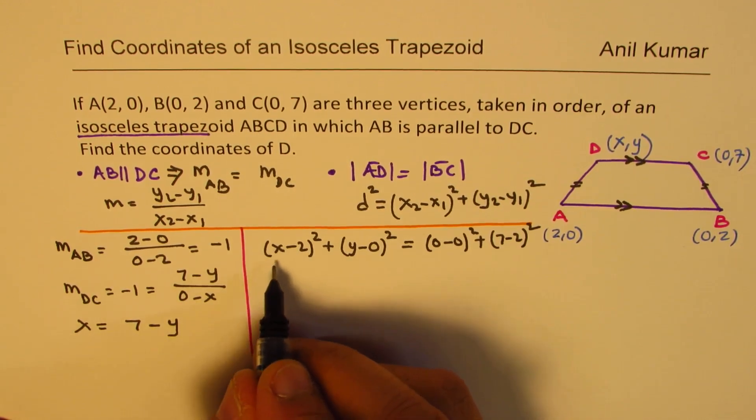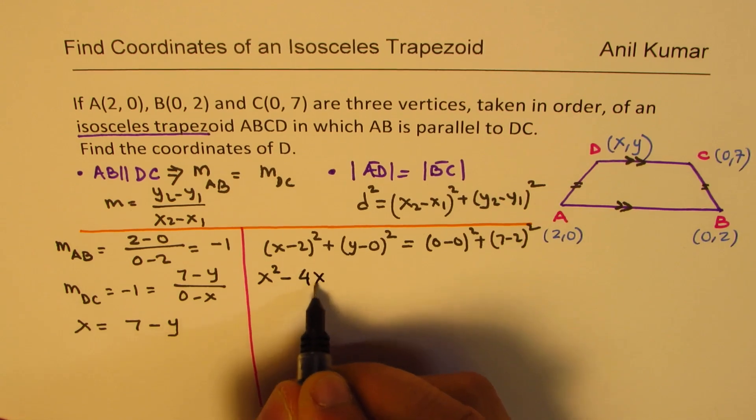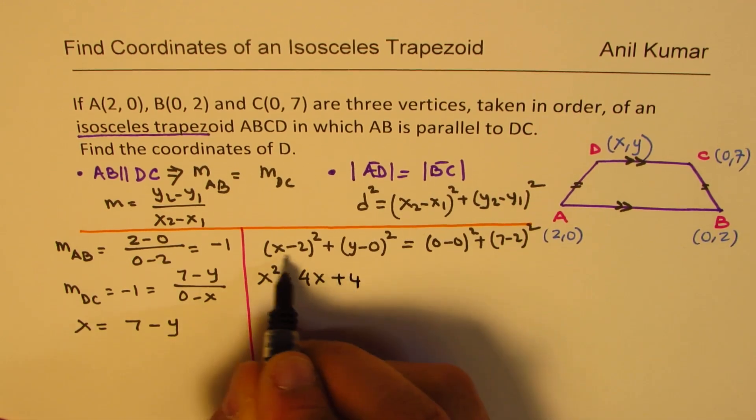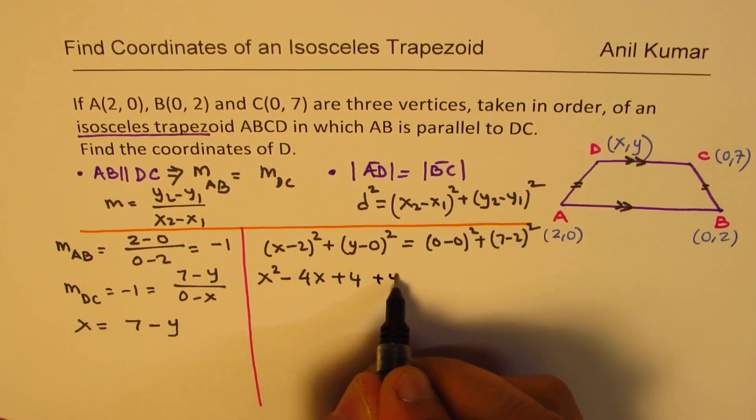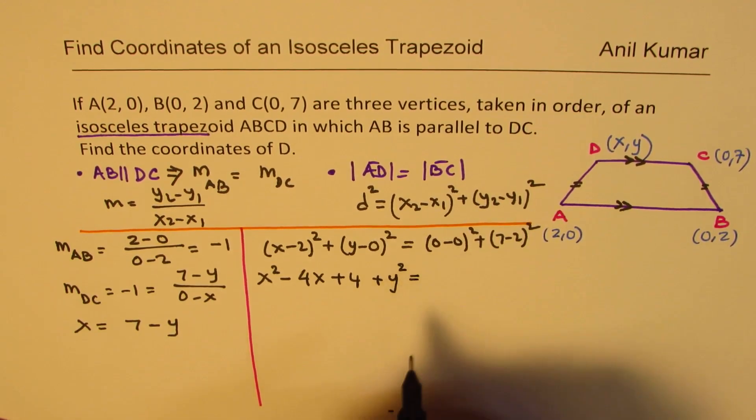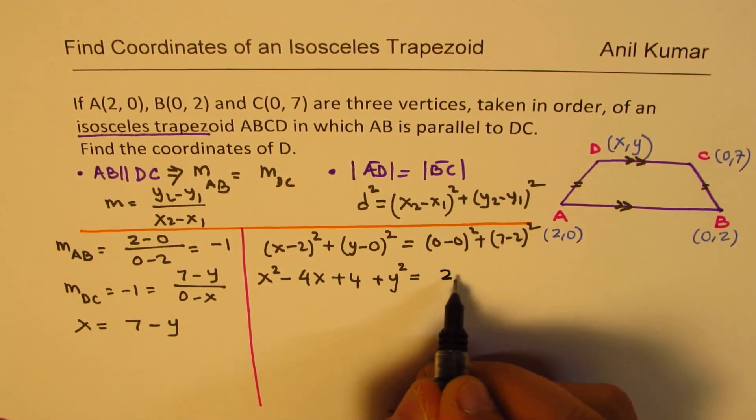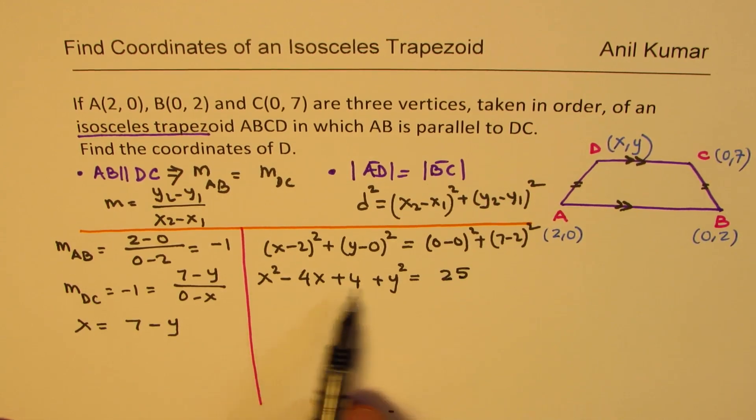So here we get, let's open this bracket. We get X² minus 4X plus 4, three terms. Here we get plus Y² equals to that is 0. 5² is 25.